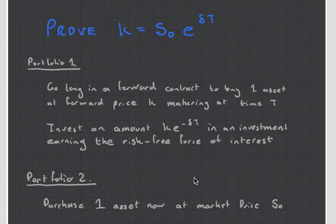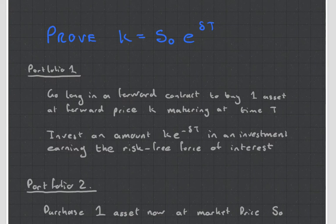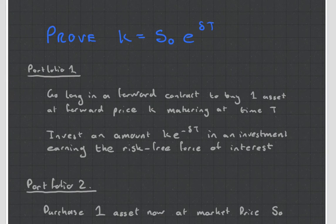Portfolio number two is that we actually purchase one asset now at market price. Now, my apple example does break down a bit because in one year's time, the apple will be rotten. But let's pretend that the apple doesn't go rotten. So we purchase our one apple now at market price, say 10 rand. So now, at time T, so these are our two portfolios. Portfolio one is I've got some money in the bank. Portfolio two is I've actually bought the asset. Now let's look at our timeline.